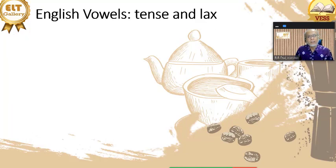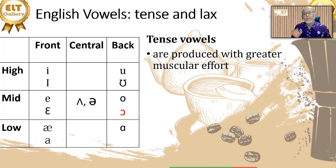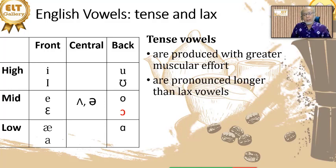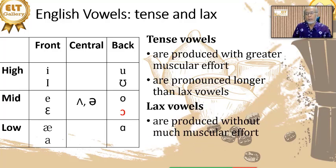What are tense and lax vowels? Let's start with the vowel chart. Tense vowels are vowels which are produced with greater muscular effort — the jaw muscles and also the tongue muscles. Because of that, the vowels are pronounced longer than lax vowels. Lax vowels, on the contrary, are produced without much muscular effort, and we only have shorter vowels.